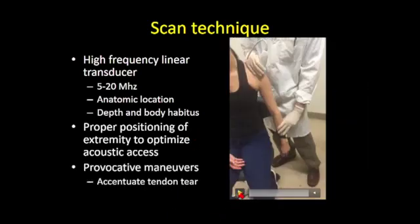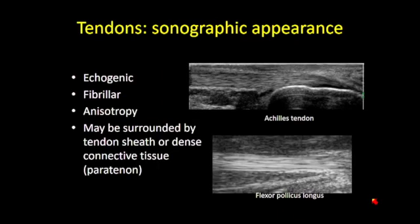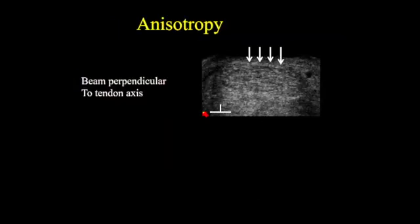Provocative maneuvers are always very helpful to accentuate tendon pathology and are something we can use to our advantage. A normal tendon, regardless of location in the musculoskeletal system, has a very echogenic fibrillar appearance due to the arrangement of extracellular collagen — as seen here with the flexor pollicis longus tendon in the thumb and the Achilles tendon in the heel. Tendons are echogenic, fibrillar, display anisotropy, and may be surrounded by synovial-lined sheath or fibroadipose connective tissue.